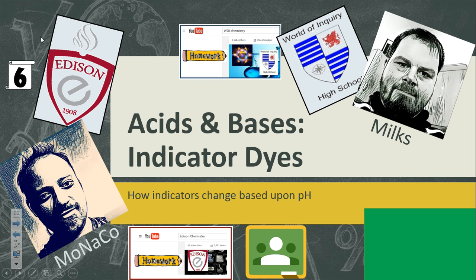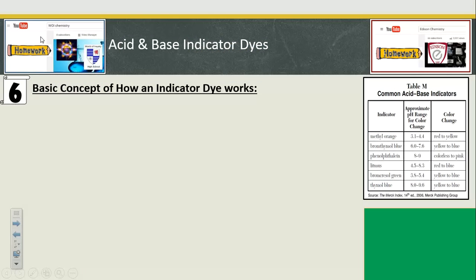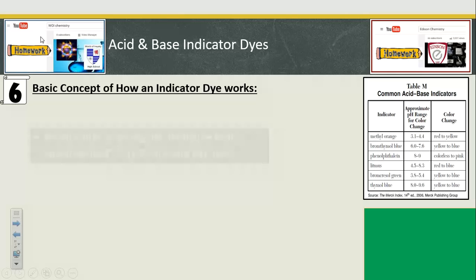Lesson six in our acids and bases unit, we've got to talk about some indicator dyes. How indicators change color based upon pH. And this is a really cool part of chemistry because we've got these chemicals that change color based upon the concentration of acid or base in the solution. And we have a whole reference table, M, to tell us about the top six indicator dyes that we like to use.